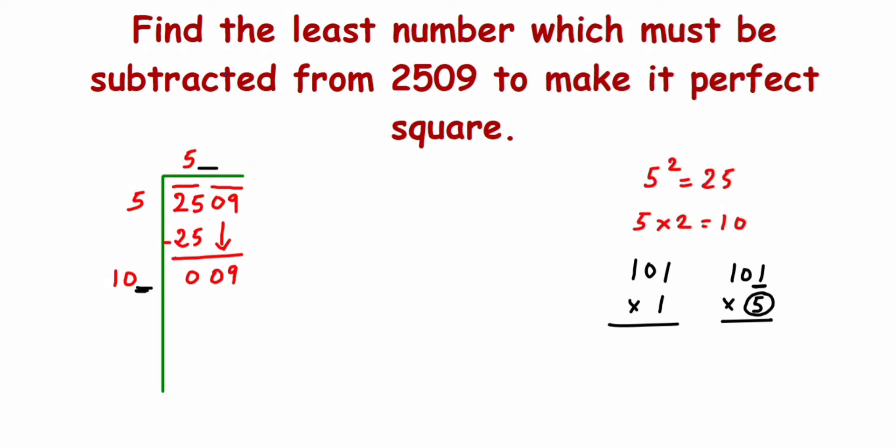101 multiplied by 1 is 101, but this is quite a huge number. We have 9 here in this step, so we should take less than that. In that case, we'll go with 0. 100 multiplied by 0 is 0, which is less than 9, so we'll take 0 here.